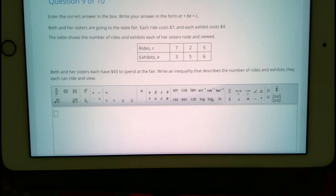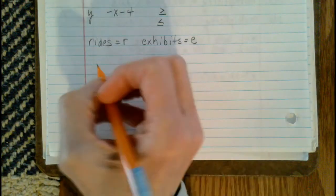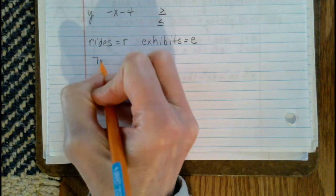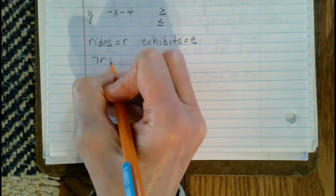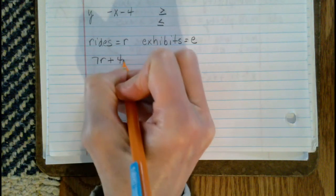What we're going to be doing is writing a money inequality. Each ride costs $7 and each exhibit costs $4, and they each have $65 to spend at the fair.